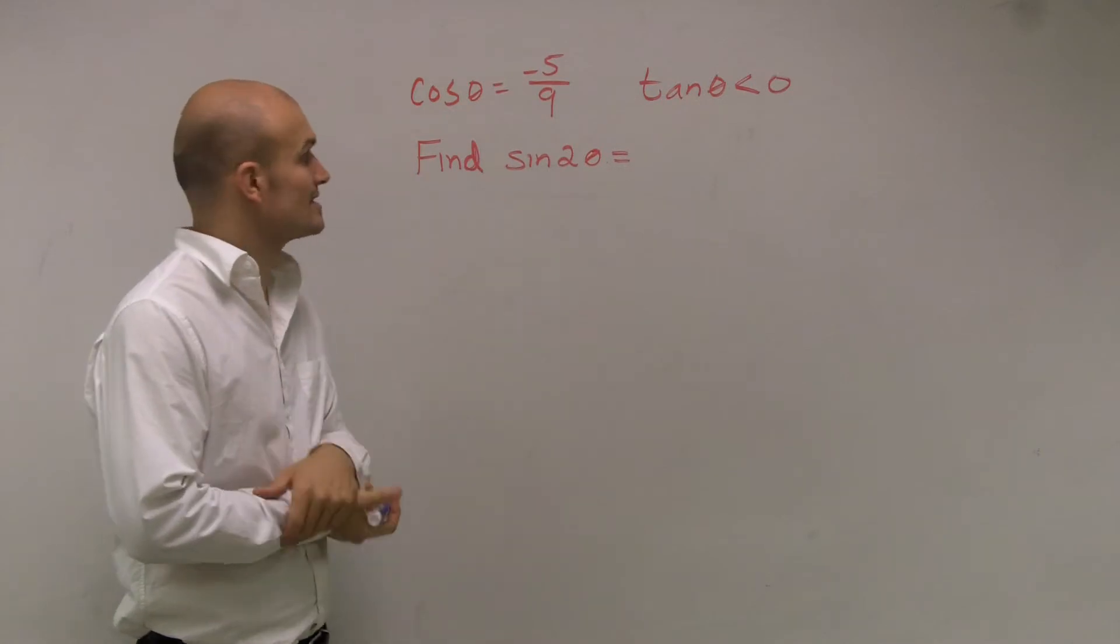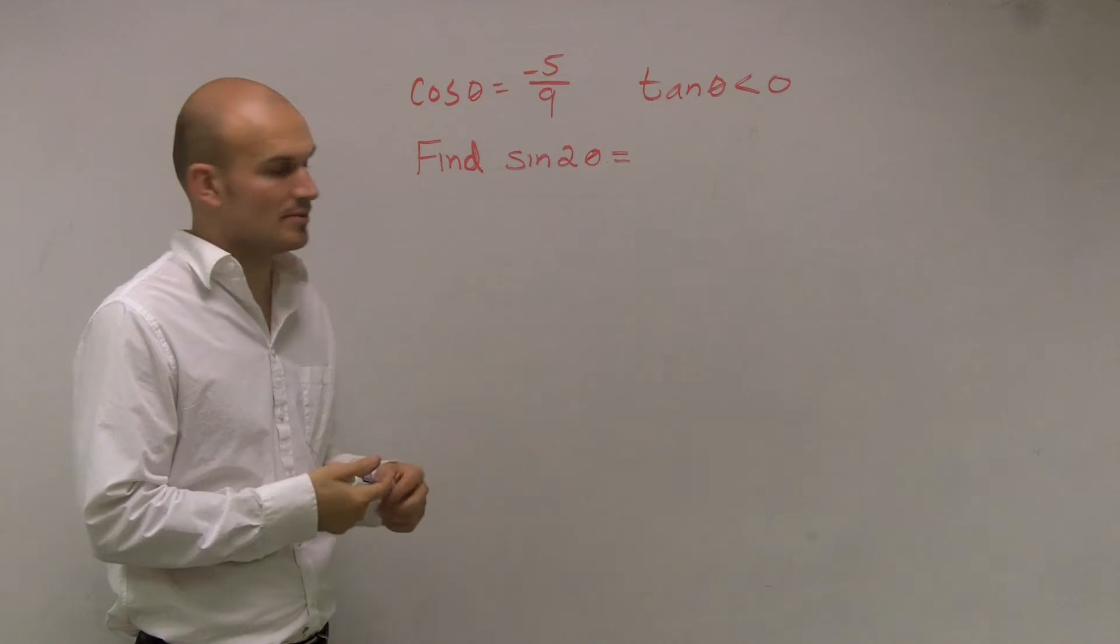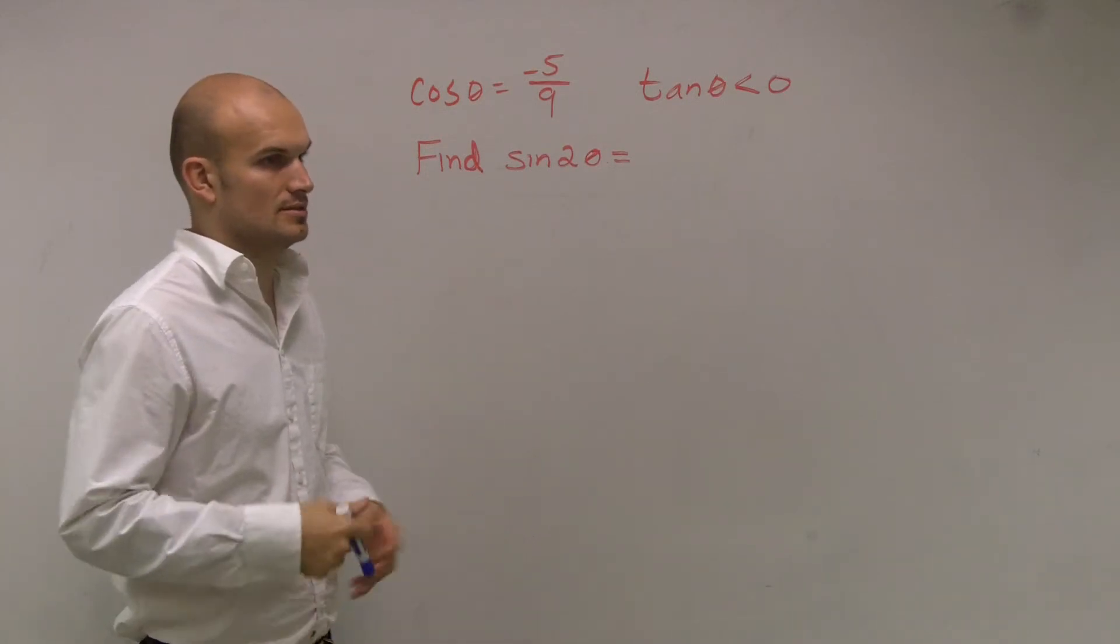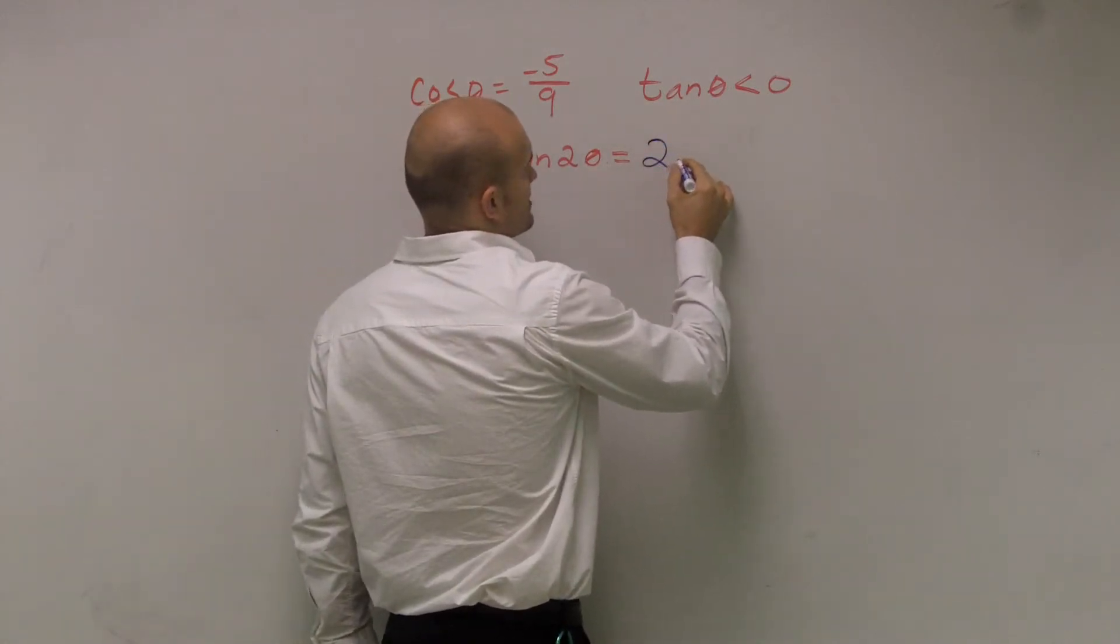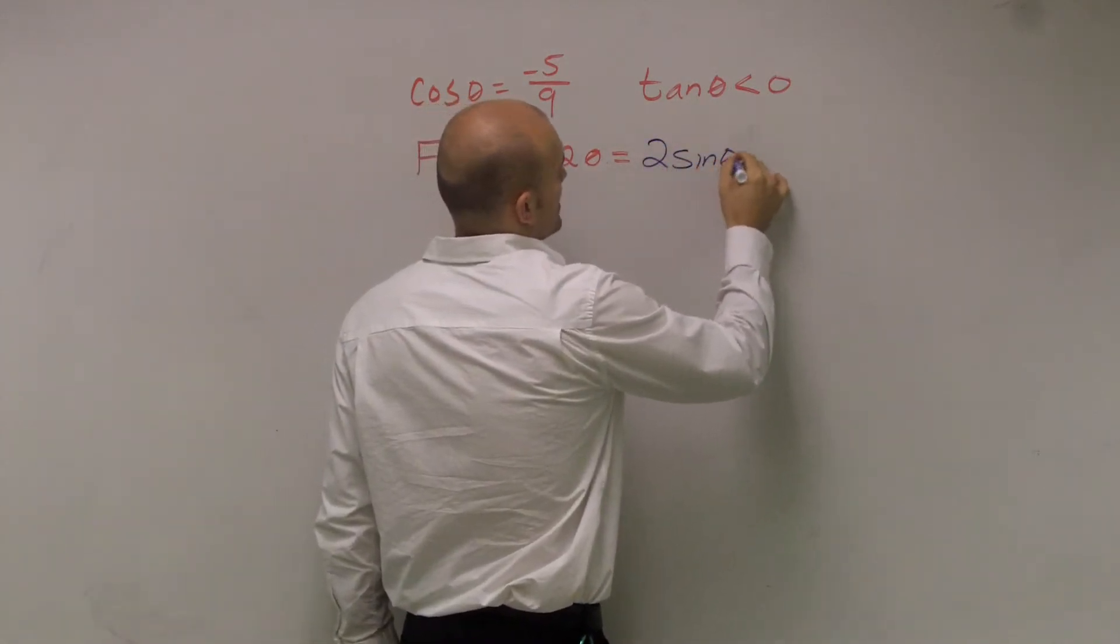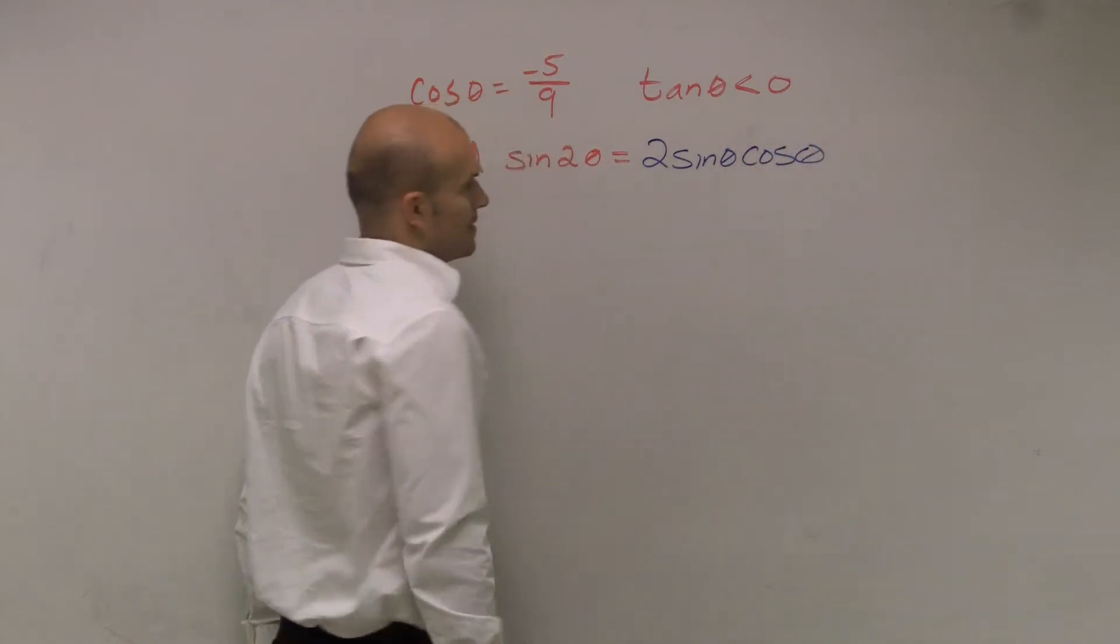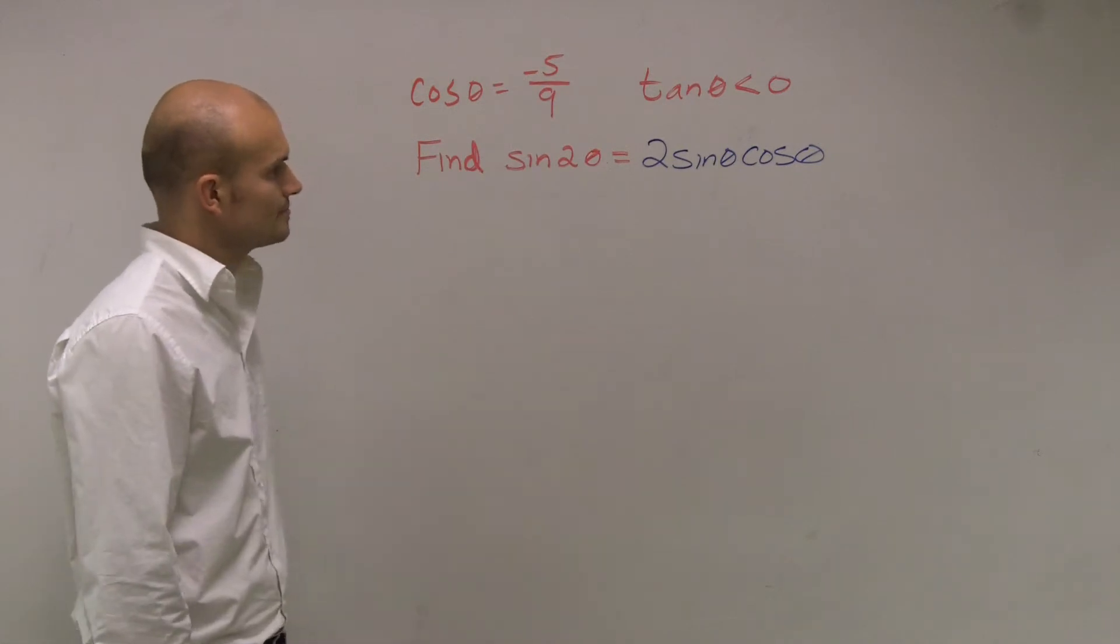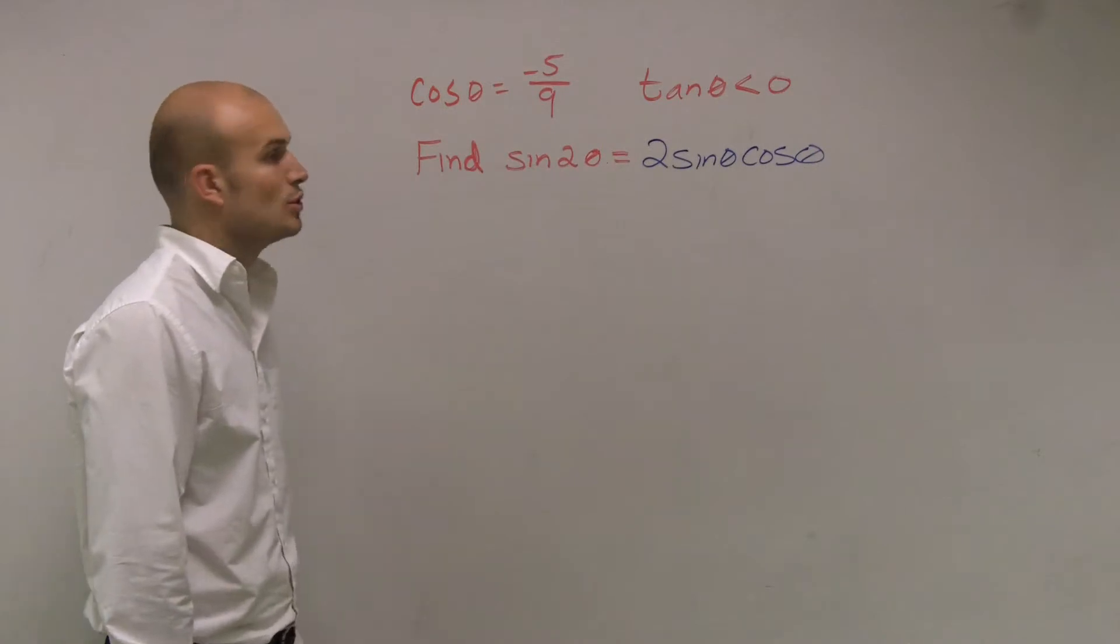We need to figure out what the sine of a double angle is, right? So obviously if we're going to use the sine of a double angle, we're going to have to use that formula. You know what the formula is? It's in your book, and that's going to be 2 times sine of theta times cosine of theta. So sine of 2 theta equals 2 sine of theta times cosine of theta.